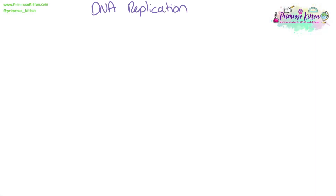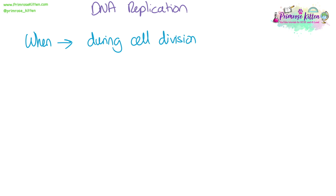DNA replication. When does DNA replication happen? It's during cell division, during the S phase of the cell cycle — the synthesis phase — and this happens during interphase.